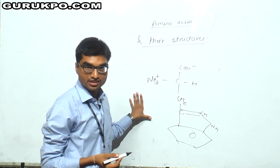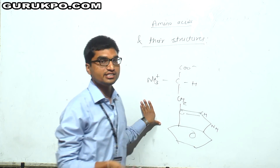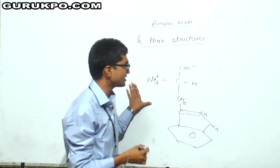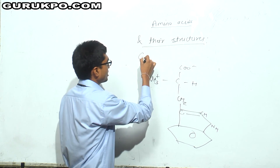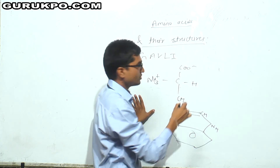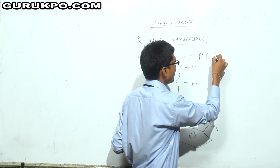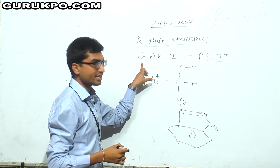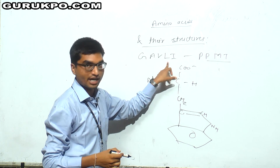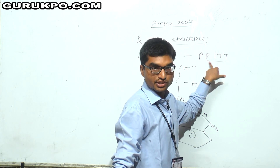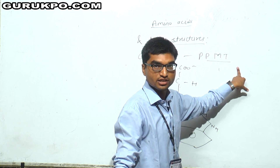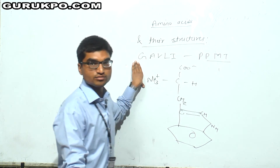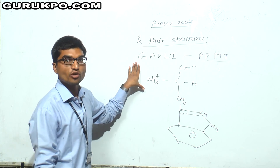What is the trick to easily learn all types of non-polar amino acids? This can be learned by a simple technique: G-A-V-L-I (Gavli) and the second one is double PMT. This stands for glycine, alanine, valine, leucine, isoleucine, proline, phenylalanine, methionine, and tryptophan. By knowing this simple technique, you will be able to remember all the structures of non-polar amino acids.